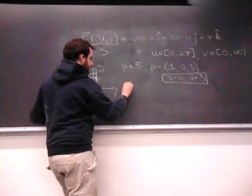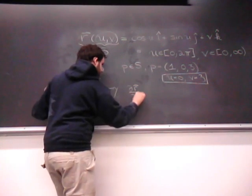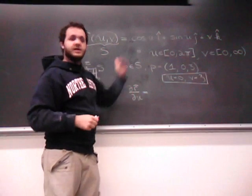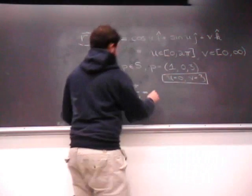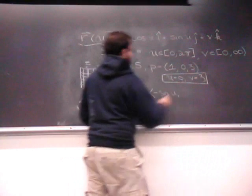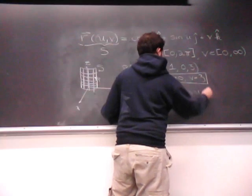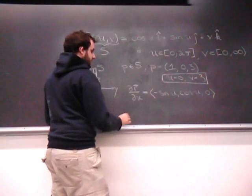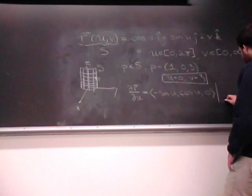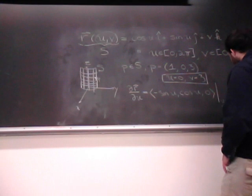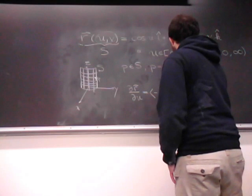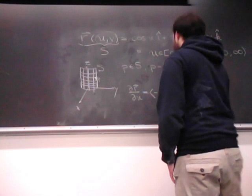So, in other words, partial r, partial u, which is the vector equation where you take the partial derivative with respect to u component-wise. So, that would be negative sine of u, cosine of u, 0. And so, when u equals 0 and v equals 3, we'll evaluate this at u equals 0 and v equals 3, we're going to get that this is 0, 1, 0.